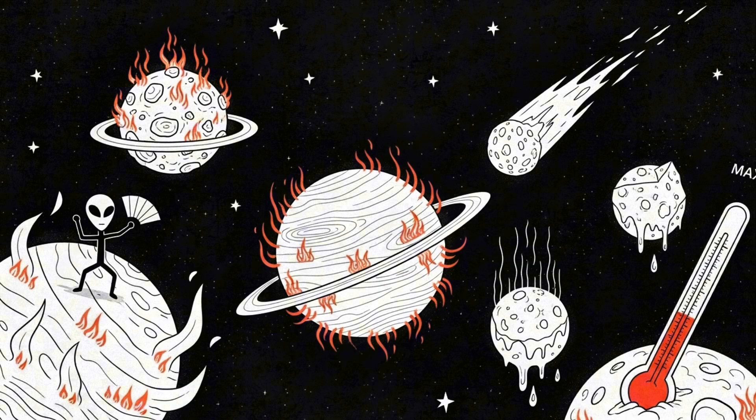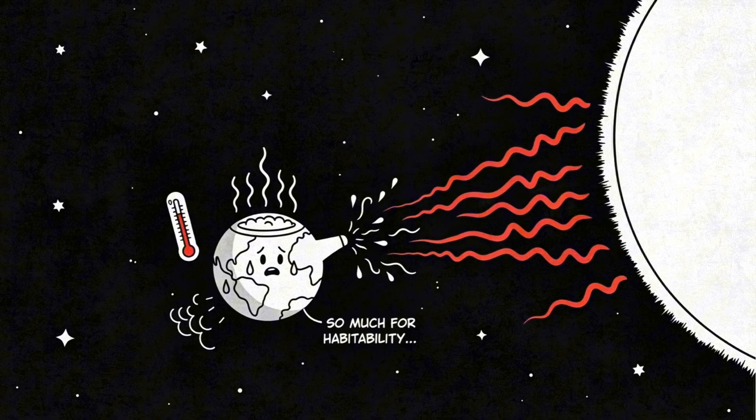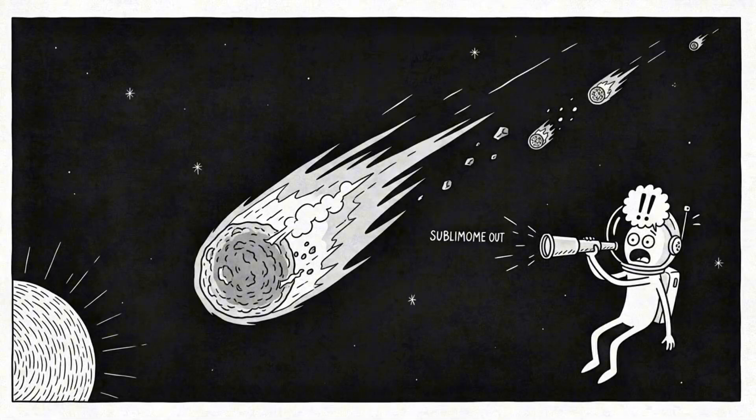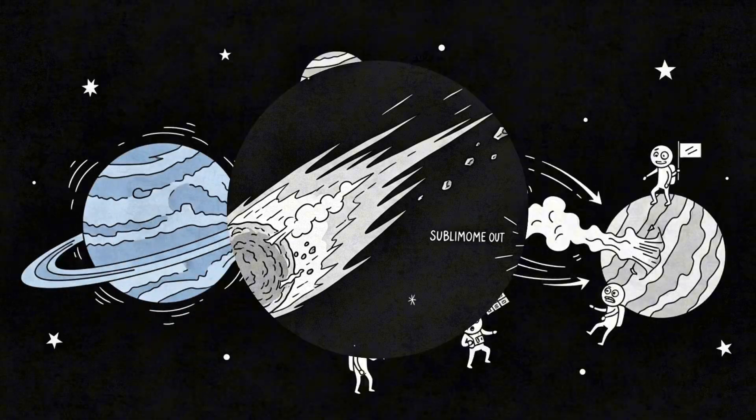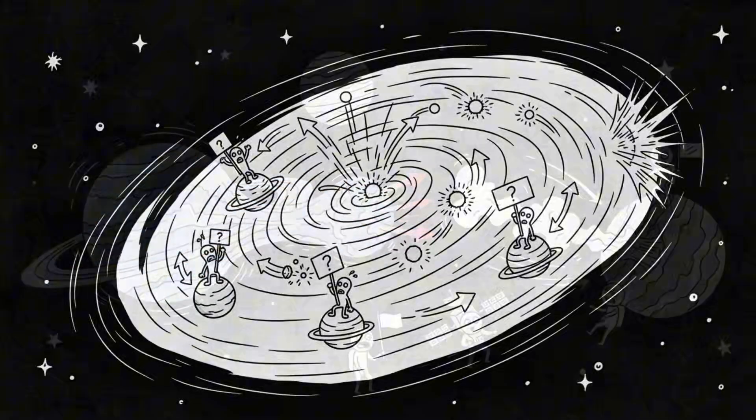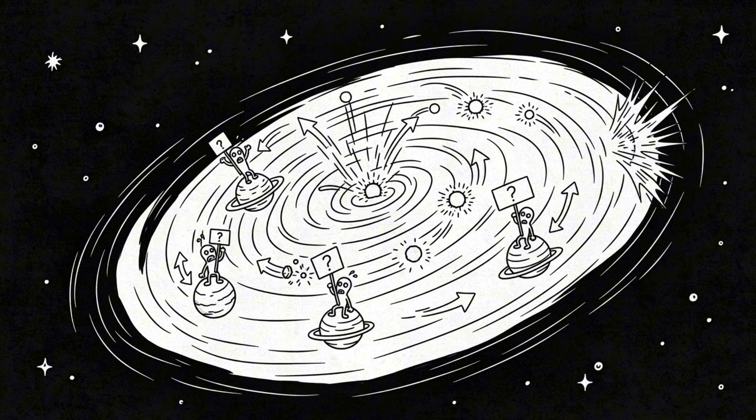Meanwhile, in the broader universe, everything's heating up. Exoplanets that were borderline habitable now resemble boiling kettles. Comets start sublimating farther out. Entire planetary atmospheres swell and possibly escape. Galactic stability takes a nosedive.